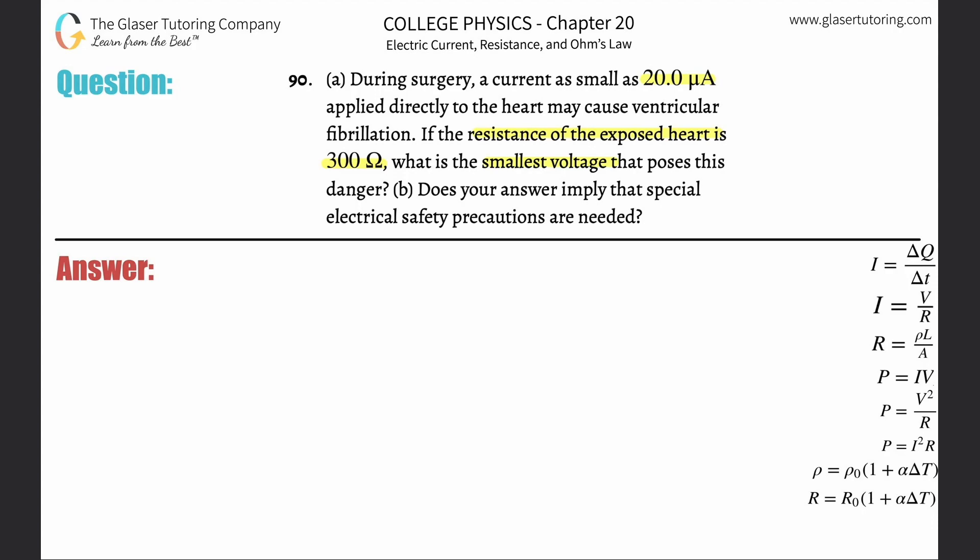So basically what we have to do is we're given a resistance, we're given a current, and we have to relate that to voltage. So remember Ohm's law, V is equal to IR, aka current multiplied by resistance.